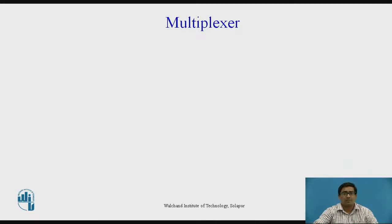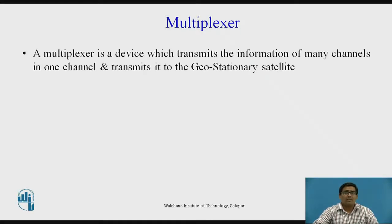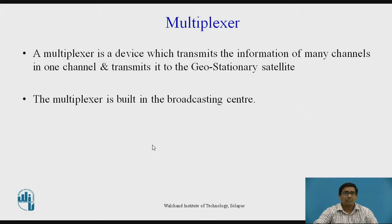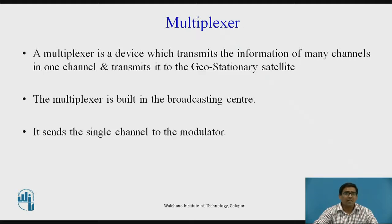Next, the multiplexer. A multiplexer is a device which transmits the information of many channels into one channel and transmits it to the geostationary satellite. After that, the geostationary satellite transmits it again towards the DTH antenna. The multiplexer is built in the broadcasting center and sends the signal channel to the modulator.